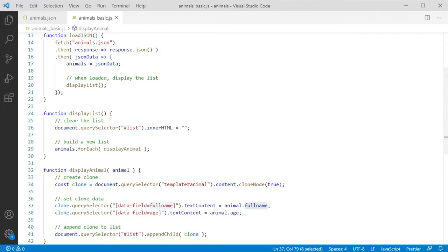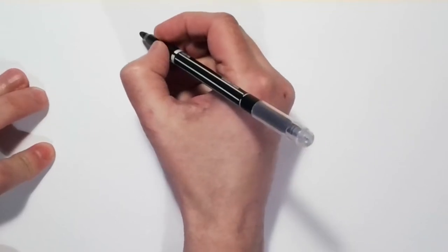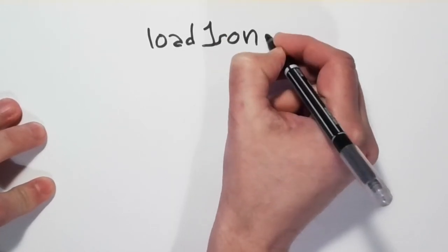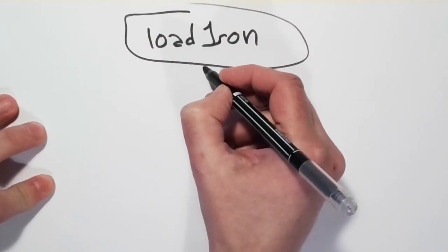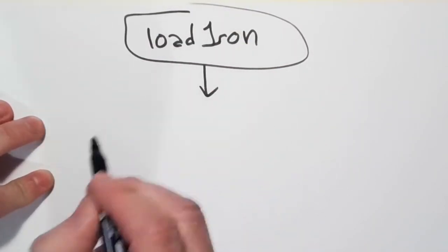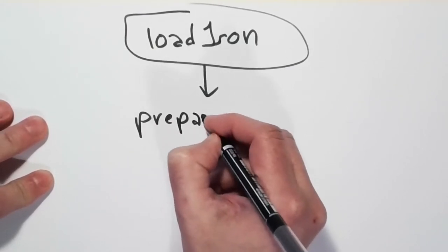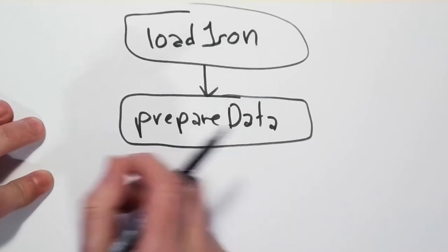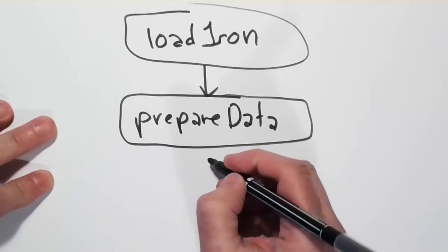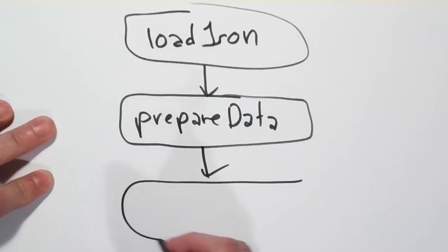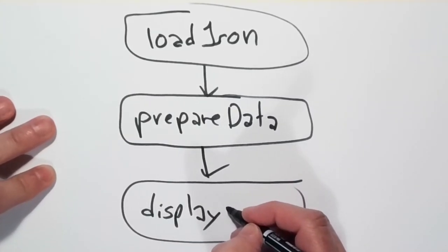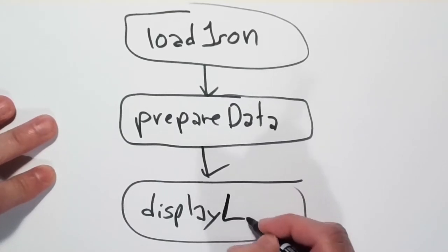We need our code to not display the JSON data directly — we want to filter or clean it. Rather than having load JSON followed immediately by display list, we want something in between: a prepare data step that somehow extracts the three different properties from the full name, and then we display that cleaned or extracted data.